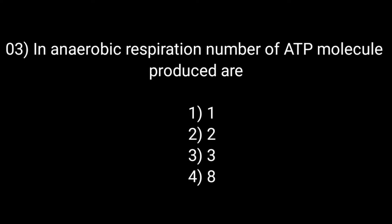In anaerobic respiration, the number of ATP molecules produced are: Option number first: 1. Option number second: 2. Option number third: 3. And option number fourth: 8. The correct answer is option number second: 2.